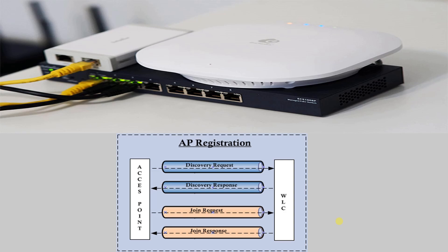As you can see here, in step number one, the AP begins with a WLC discovery and join phase. The AP sends CAPWAP discovery request messages to the WLC. CAPWAP stands for Control and Provisioning of Wireless Access Point Protocol, and it is a networking protocol that enables a central wireless controller to manage a group of wireless access points. In step number two, any WLC receiving a CAPWAP discovery request responds with a CAPWAP discovery response message.